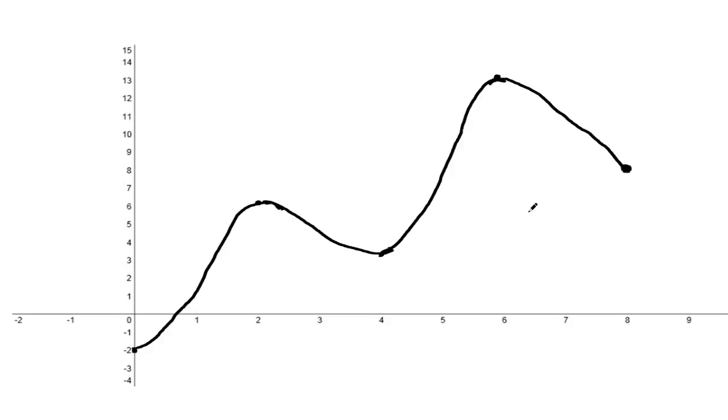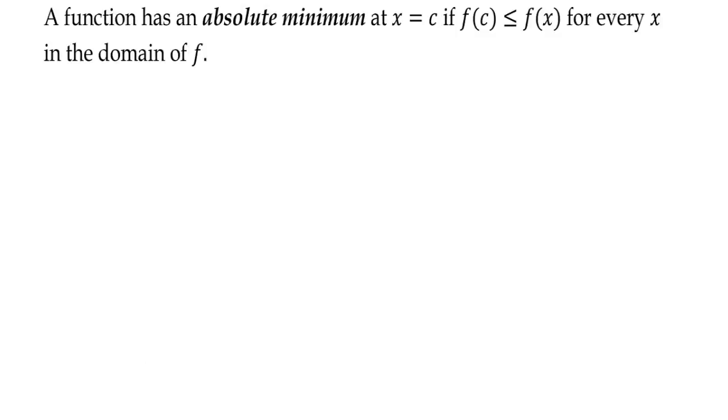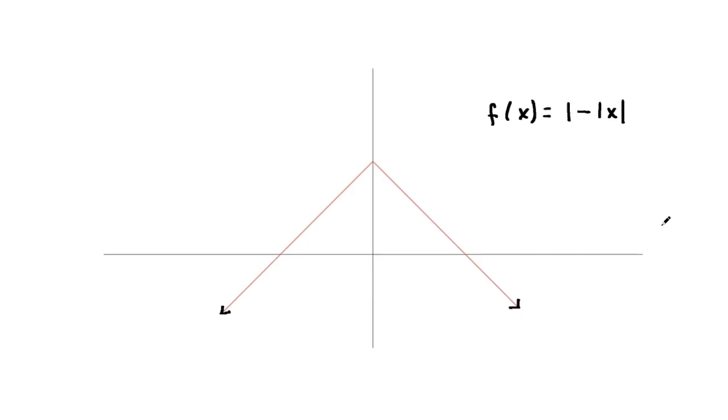However, there could be a maximum or minimum where the derivative doesn't exist. Let's take a look at an example of that. Take a look at f(x) equals 1 minus the absolute value of x. Here's the graph. This function has an absolute max at x equals 0 here, but the derivative does not exist at x equals 0. Notice we have a corner, and the derivative doesn't exist at a corner. So either the derivative at a local max or min doesn't exist, or if it does exist it's 0.